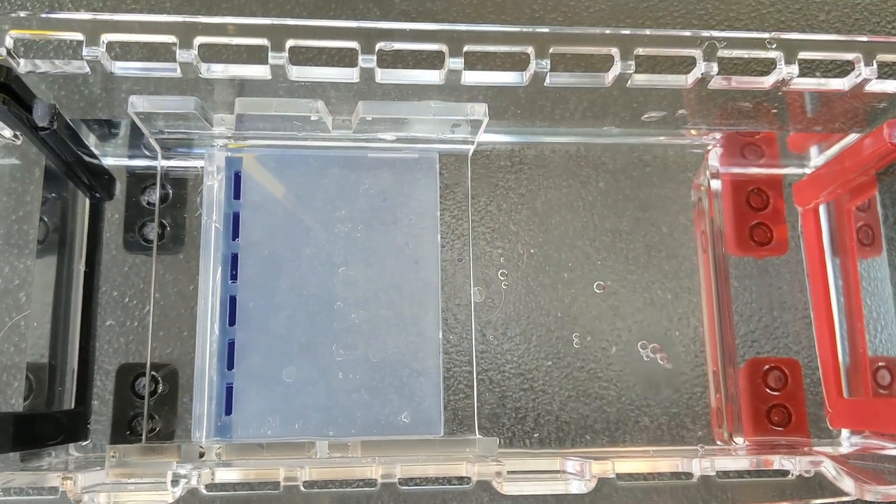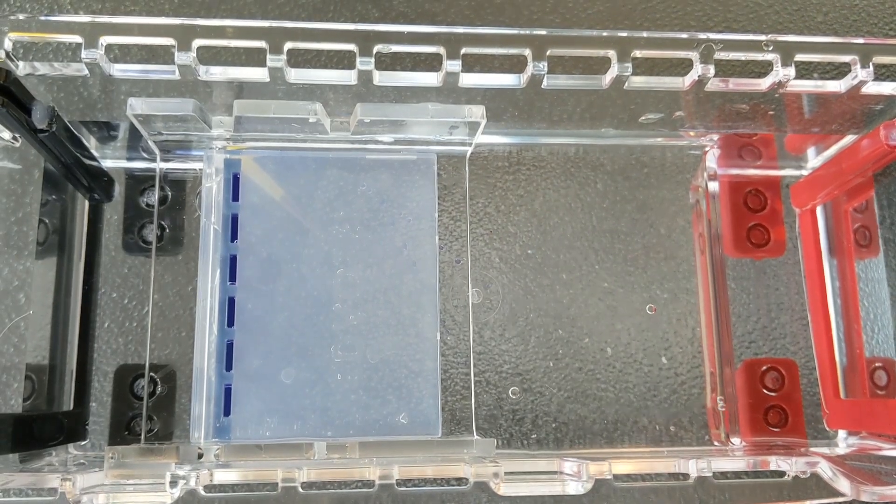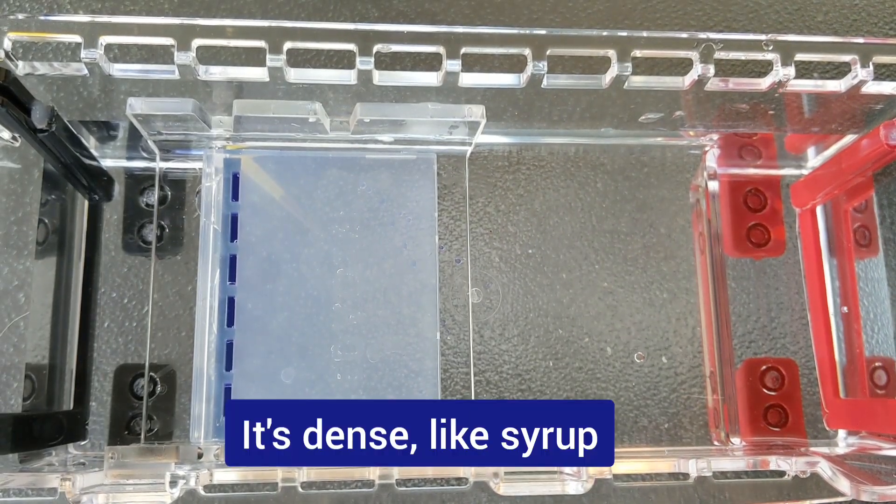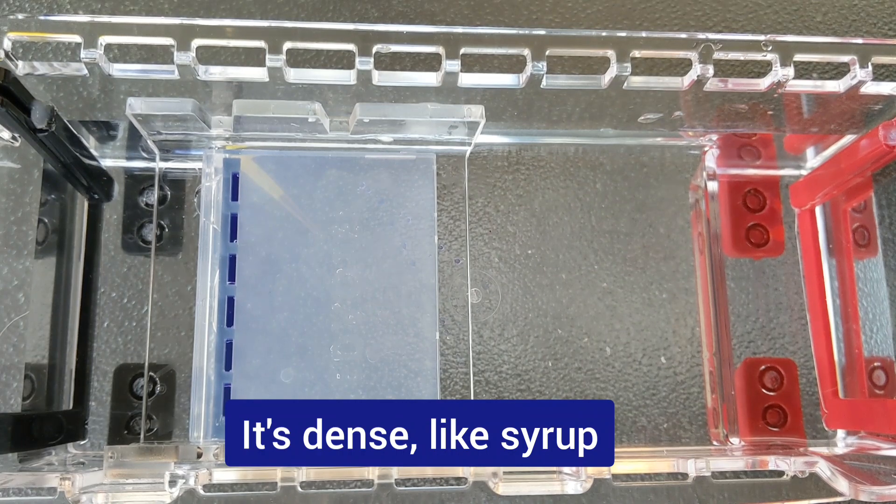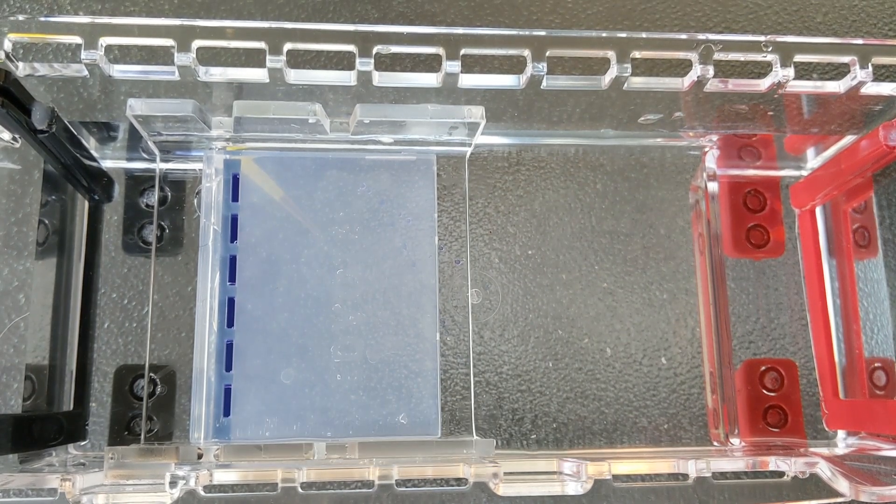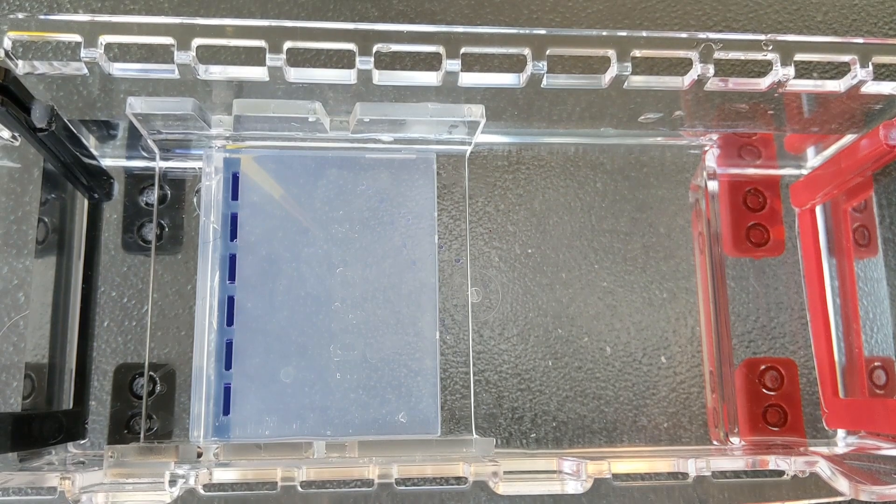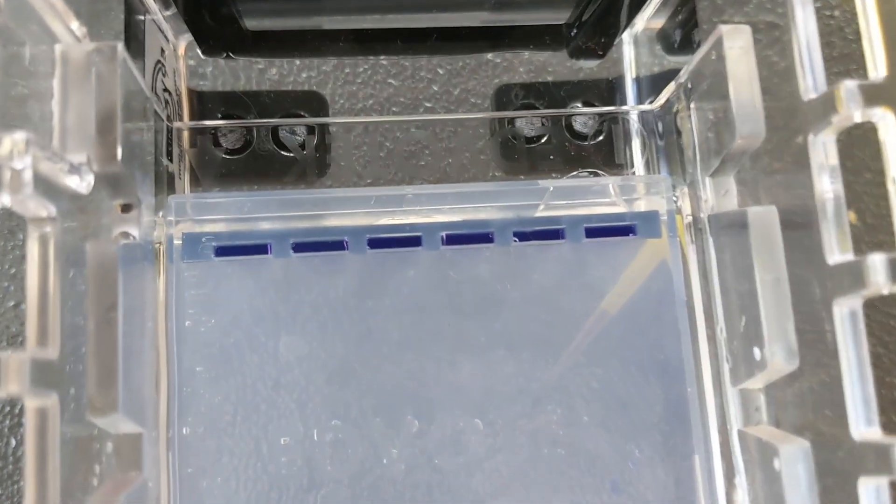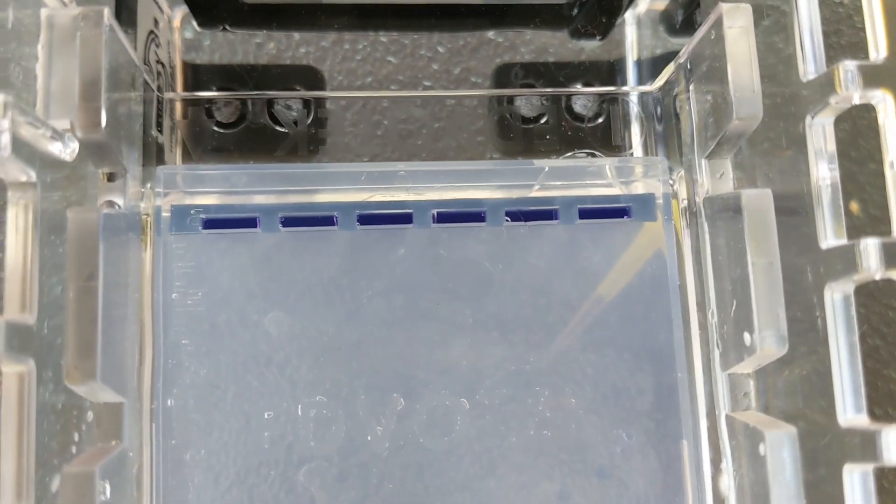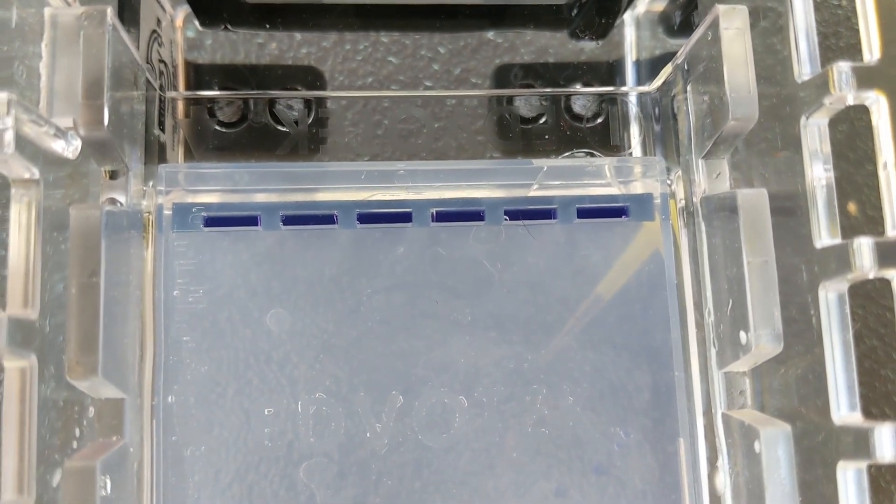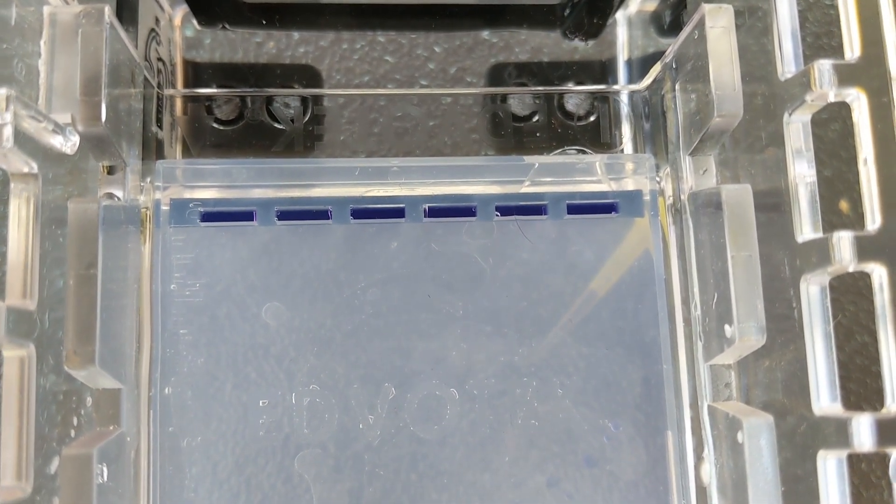The gel loading dye is heavy, so it does help keep the DNA down. So you can see, even though the buffer cascaded over it, the DNA is still really beautifully loaded. Nice dark wells. I undoubtedly got a much better load from my dry loading, at least with this sample.